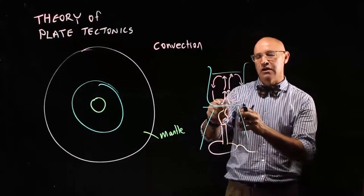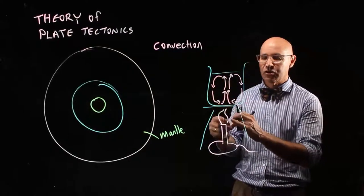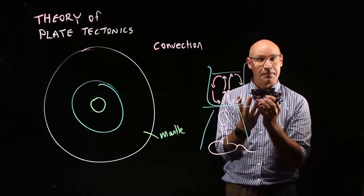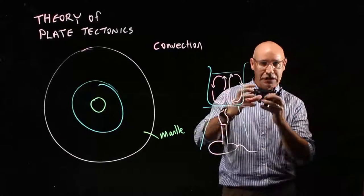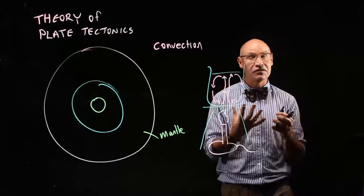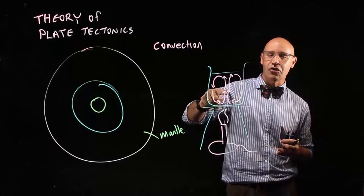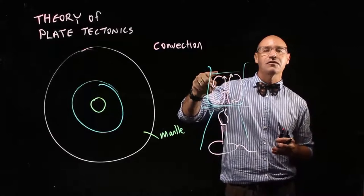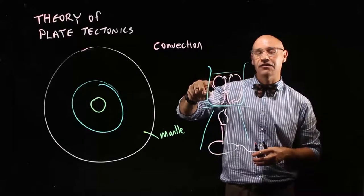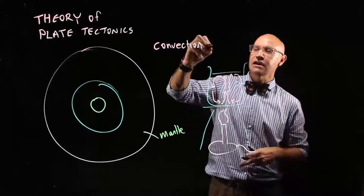Alright, so the water down the bottom of the beaker is hotter because of the flame. Because it heats up, the particles are moving faster, particle theory, they take up more space, they expand, they become less dense. And because it's less dense, it floats, so it actually rises. But then when it gets up to the top of the beaker, it's away from the flame, so it cools down and sinks again. So that is what we call a convection current.